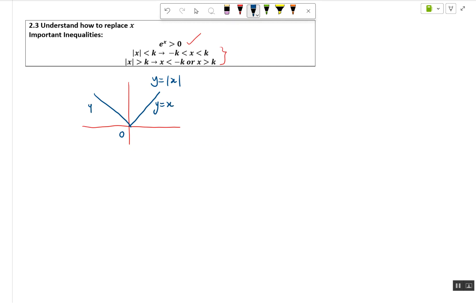One is y equals x and the other one is y equals negative x, because modulus x can be equals to k or negative k, depending on... when modulus x equals k, then x could be equals to k or negative k.